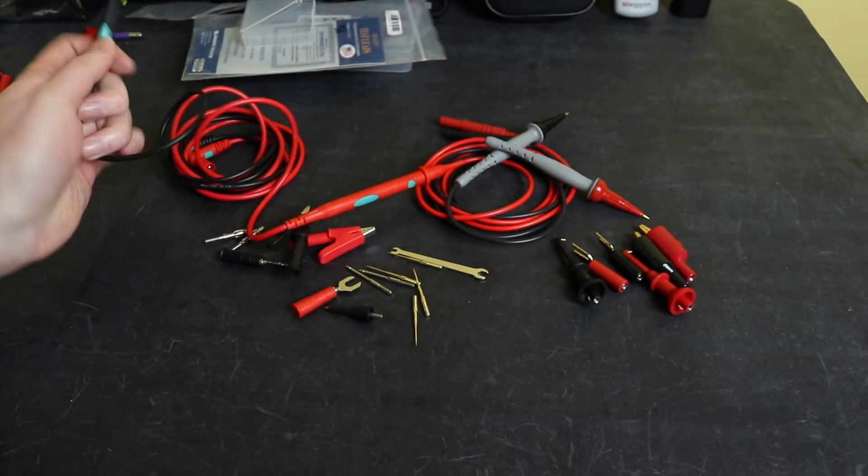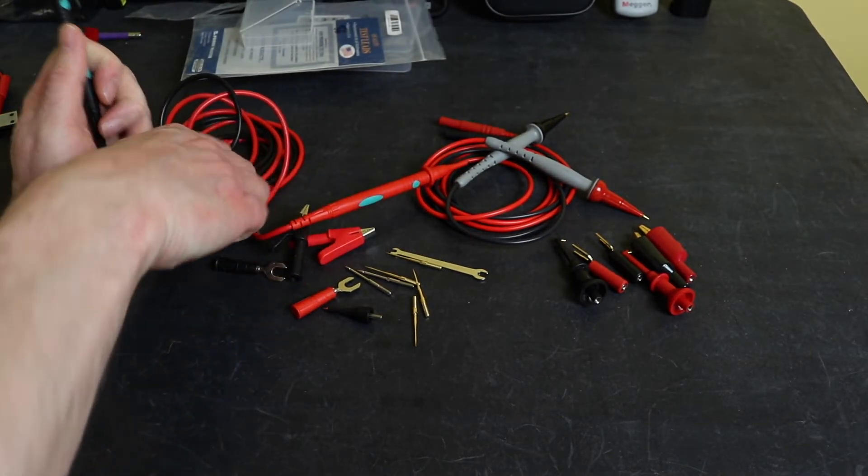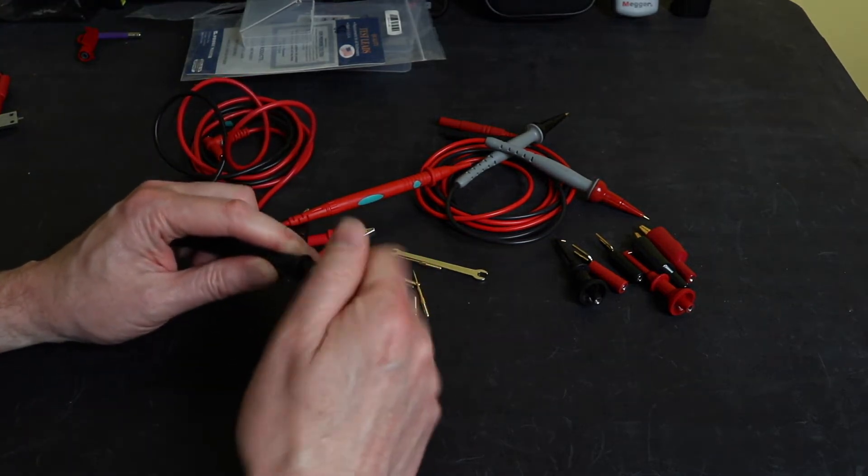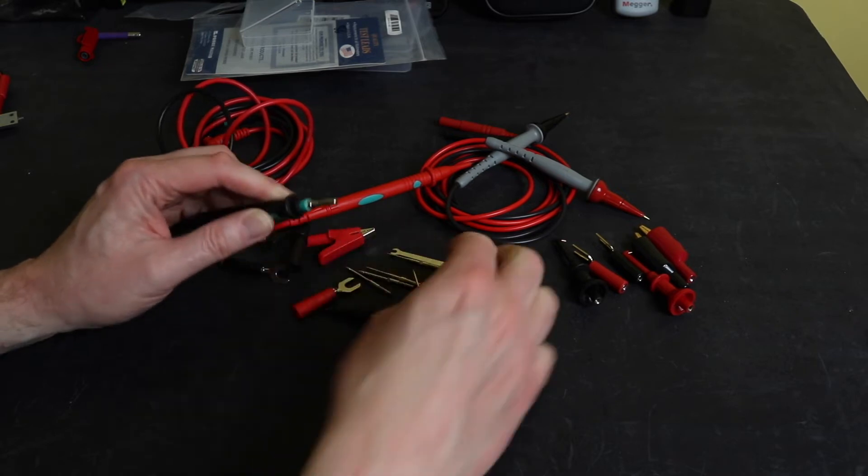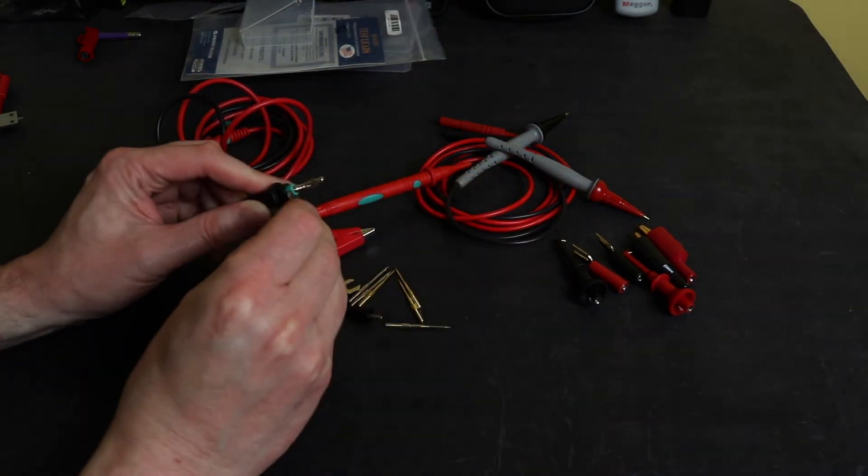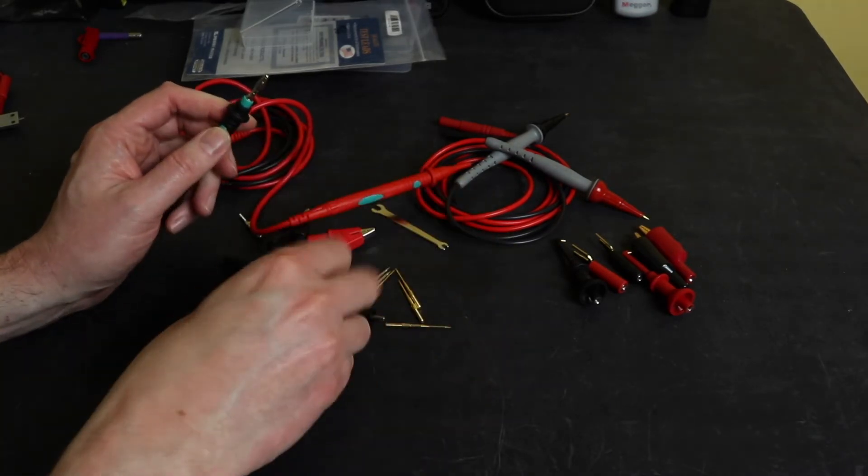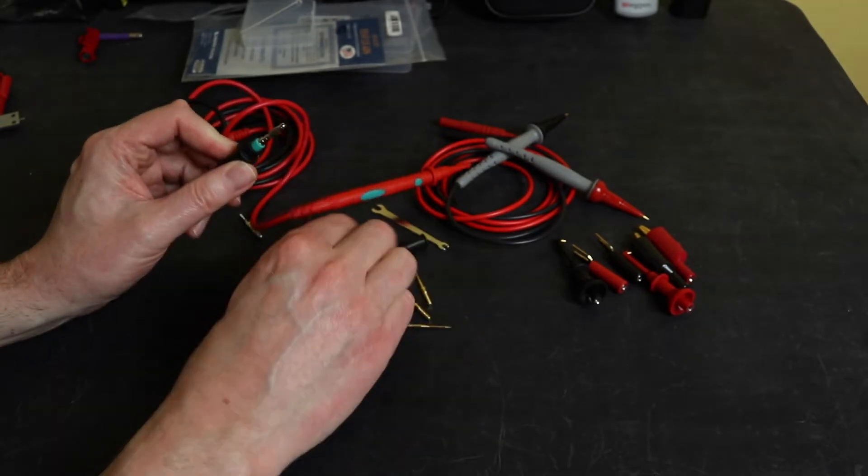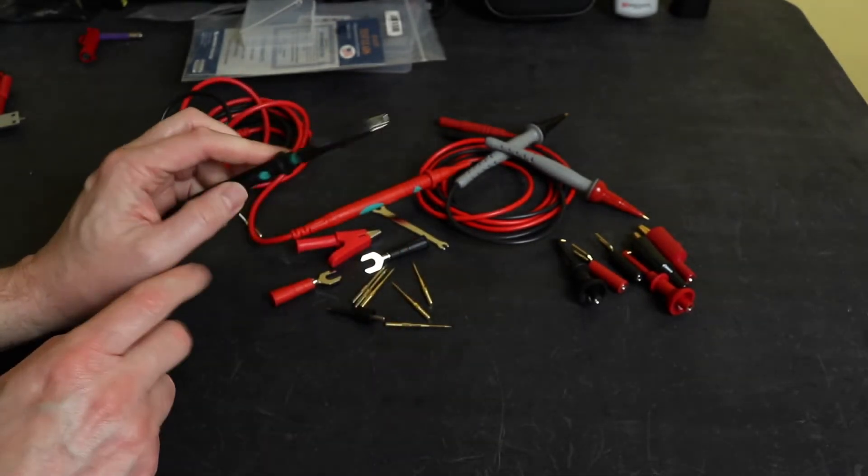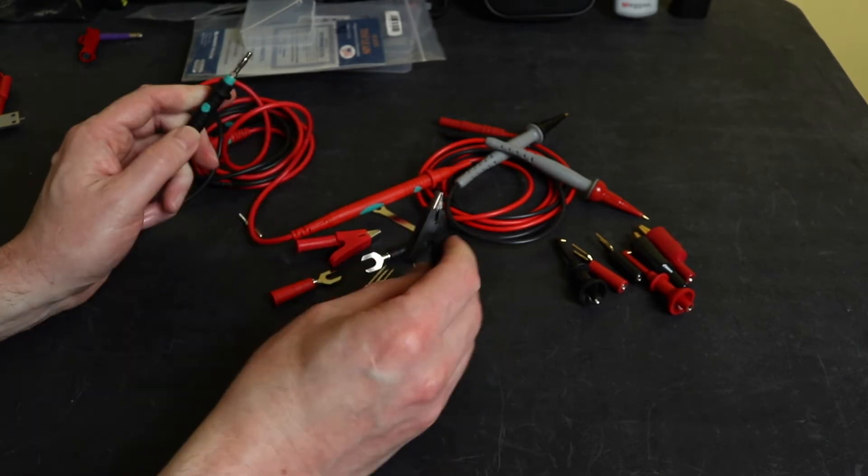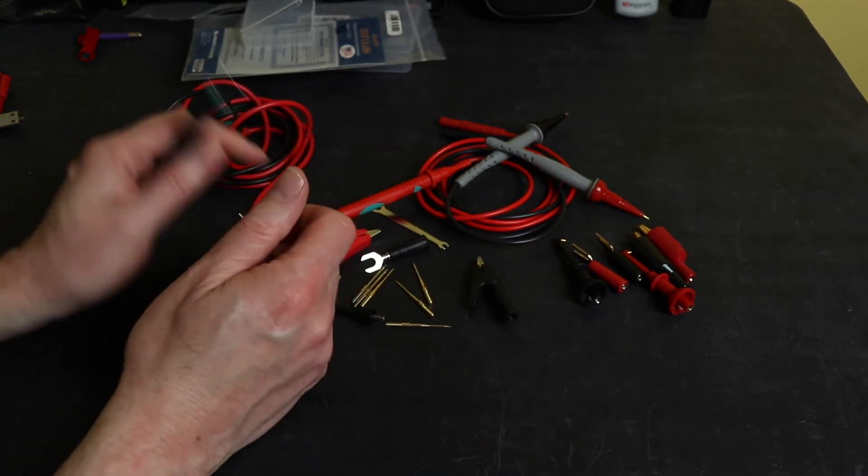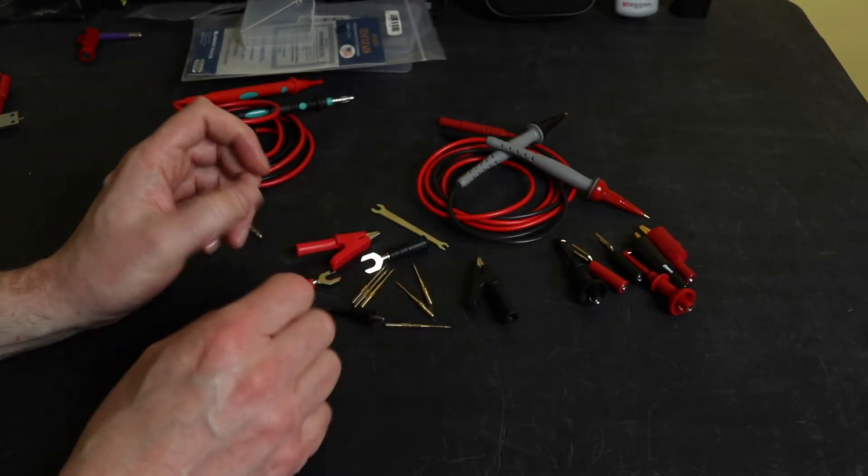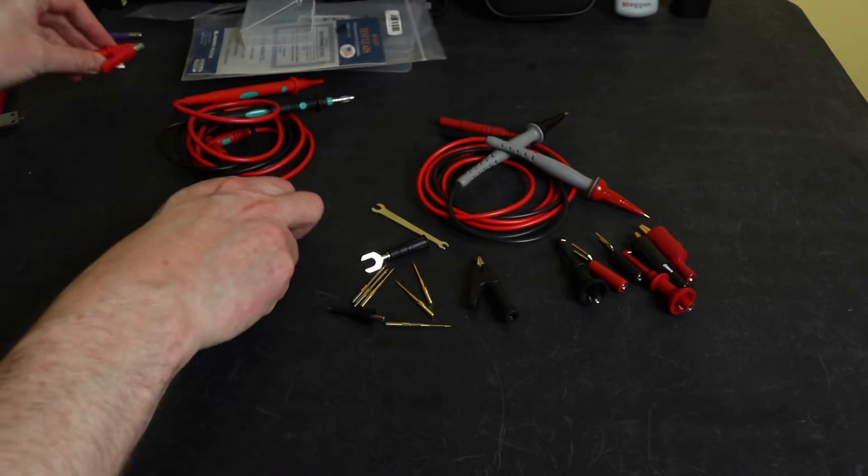To use the other accessories with the Kiwitz lead, you have to screw in the banana accessory and tighten it with the spanner, then you can plug on either the croc clip or the spade terminal. It's a bit more long winded to use the accessories with Kiwitz leads than the more straightforward Probe Master leads, in my opinion.